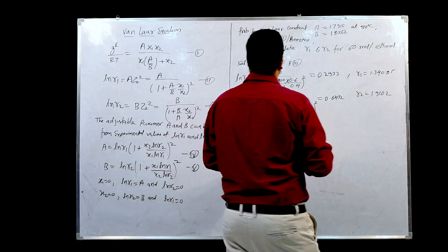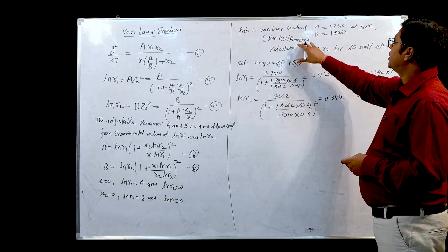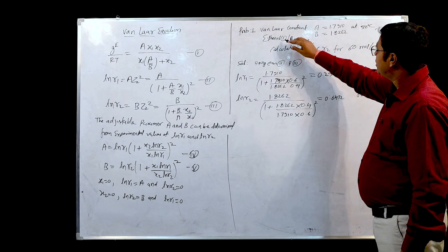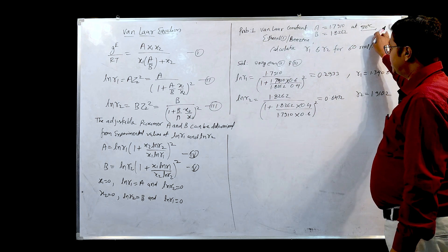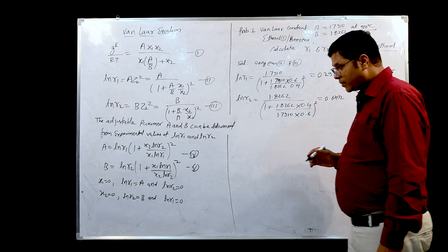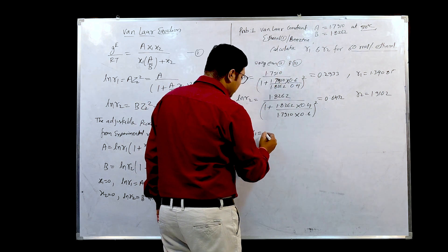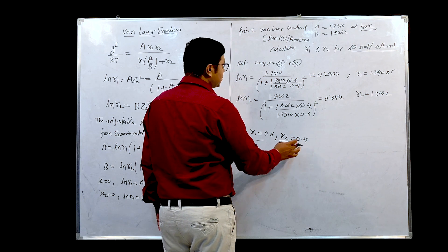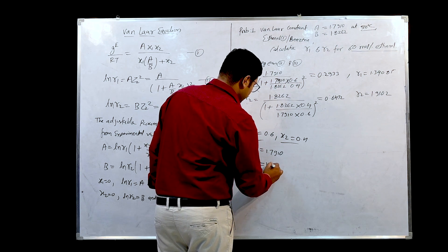One example is taken from Y.V.C. Rao. The Van Laar constants for the ethanol-benzene solution are A = 1.7910 and B = 1.8262, meaning the Van Laar constant for ethanol is 1.7910 and for benzene is 1.8262 at 50°C. We have to calculate the values of γ₁ and γ₂ for 60 mole percent ethanol. In this problem, treating ethanol as component 1, x₁ = 0.6 and therefore x₂ = 0.4. The values of A = 1.7910 and B = 1.8262 are also known.